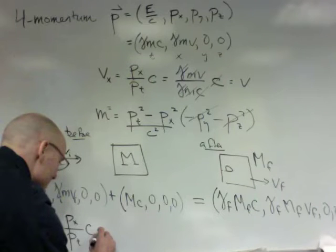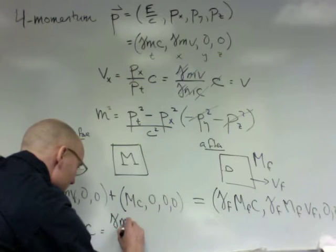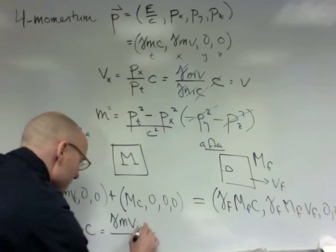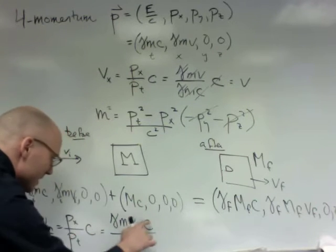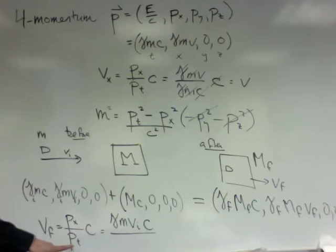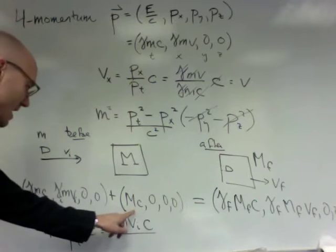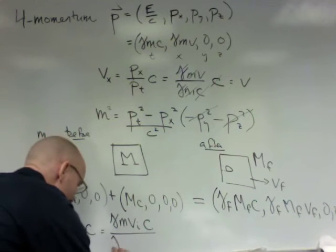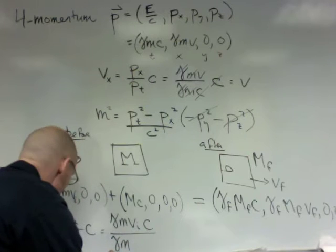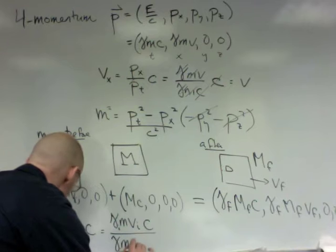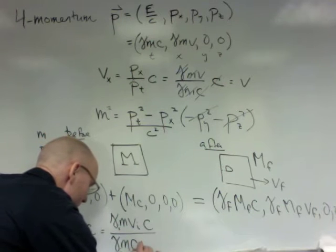So this is gamma mvi over c, that's that c, we'll put it there, and then over the time component of the momentum, which is there's a gamma imc here and there's a capital mc here, so it's gamma mmi, this is gamma i, mc plus mc.